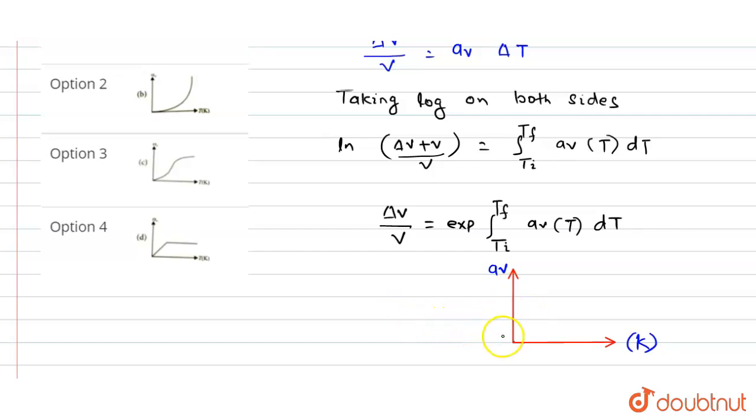From the above equation, the volume expansion changes linearly, so this graph will start from the origin and then increase non-linearly. Then after a particular temperature, the volume expansion is constant.